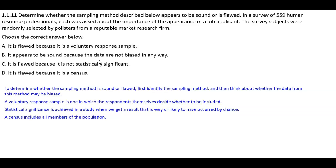A. It is flawed because it is a voluntary response sample. B. It appears to be sound because the data are not biased in any way. C. It is flawed because it is not statistically significant. D. It is flawed because it is a census.